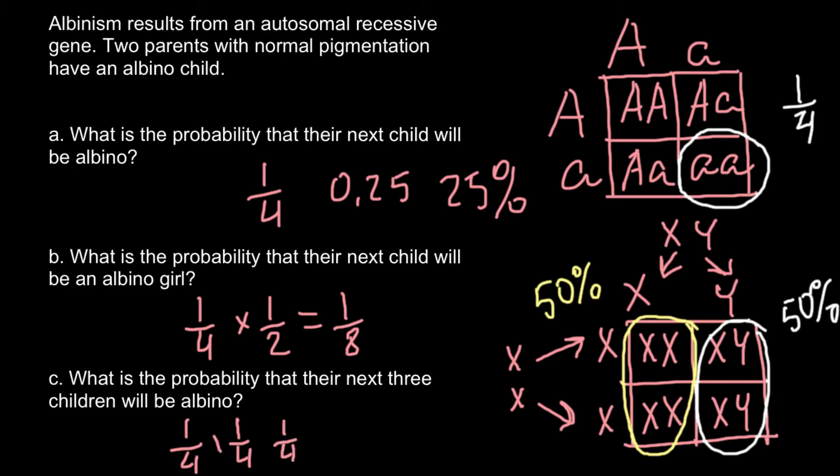So once again, we have to multiply these independent events. As you see, 1 fourth multiplied by 1 fourth would be 1 sixteenth, multiplied by 1 fourth would be 1 over 64. And this is going to be the probability to have three children that would be albino.